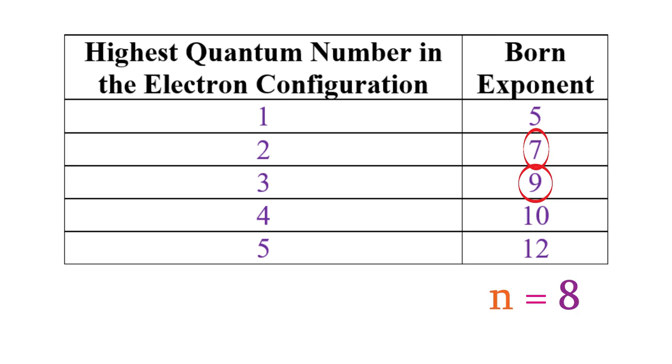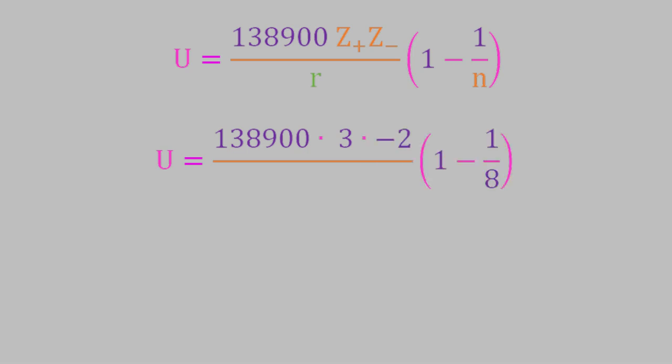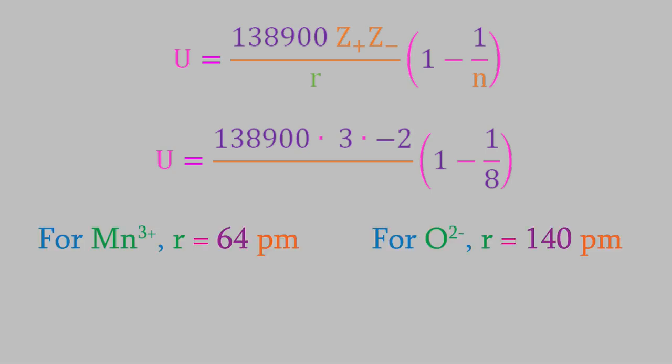Now we can plug our values into the equation. Z+ is 3, Z− is negative 2, and N is 8. We get R by adding the two ionic radii, giving us 204 picometers. When we solve the equation, we get a lattice energy of negative 3,575 kilojoules per mole. However, the lattice energy of manganese 3 oxide has actually been measured, and the real value is negative 15,090.5 kilojoules per mole — that's really far from our predicted value. That's the reason why we usually wouldn't use this simpler equation if we could use tabulated values of the hydration energy and the precipitation enthalpy.